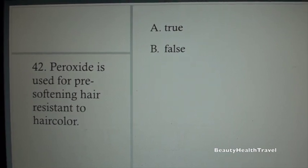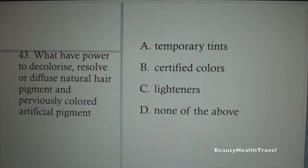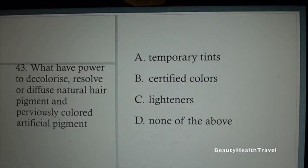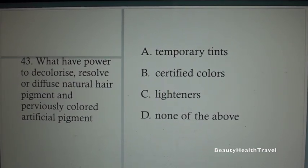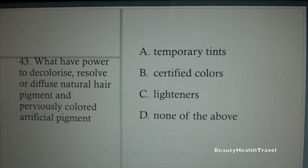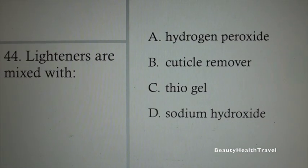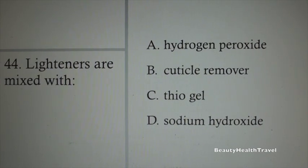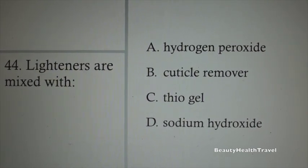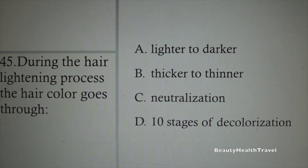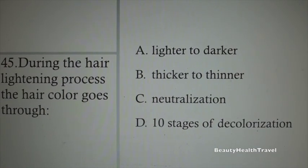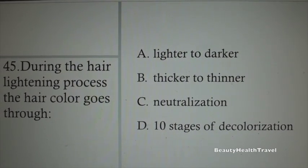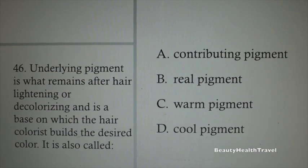Question 40: The lighter the volume of the peroxide, the more: A. Deposit of color, B. Lift of color, C. Thickness of color, D. Balance of color. Question 41: The lower the volume of peroxide, the more: A. Deposit of color, B. Lift of color, C. Thickness of color, D. Balance of color. Question 42: Peroxide is used for pre-softening hair resistant to hair color: A. True, B. False.